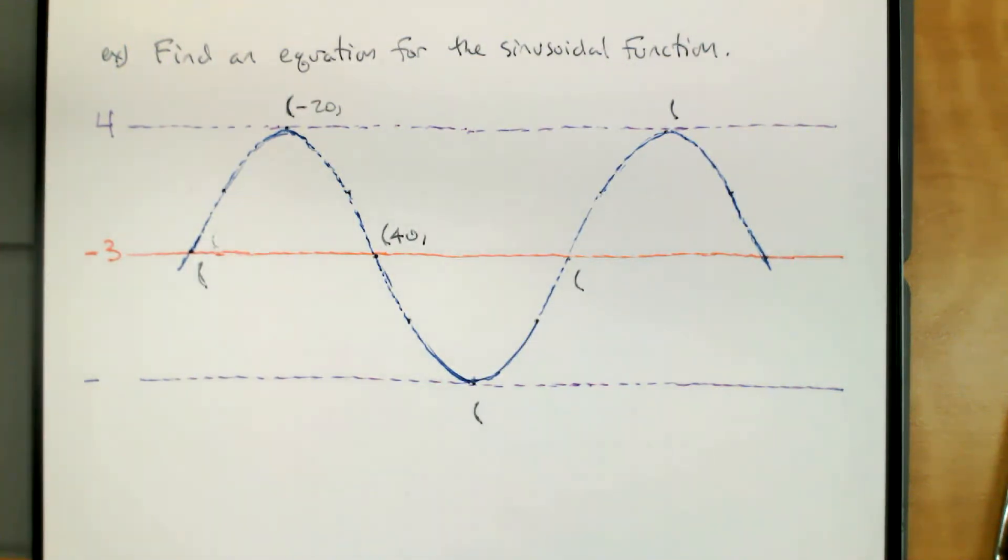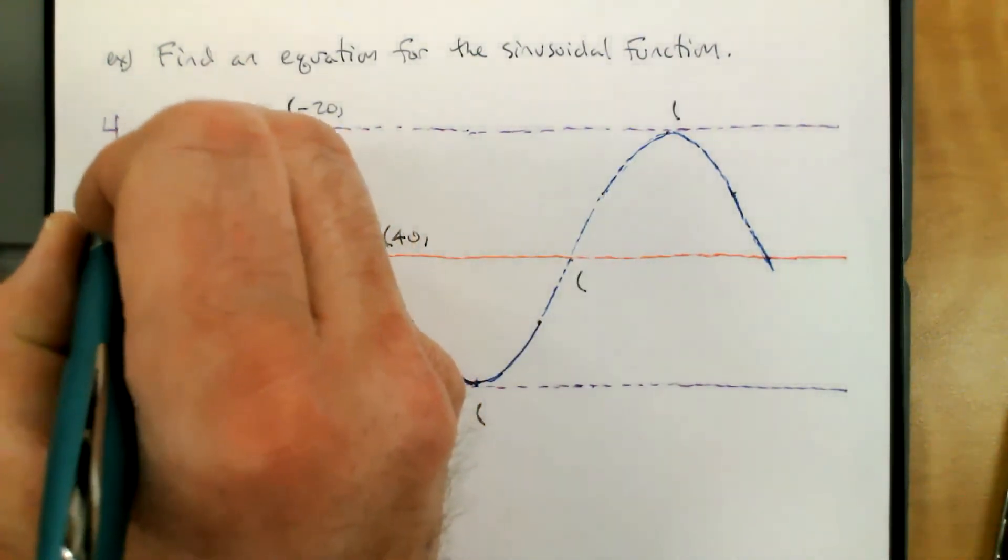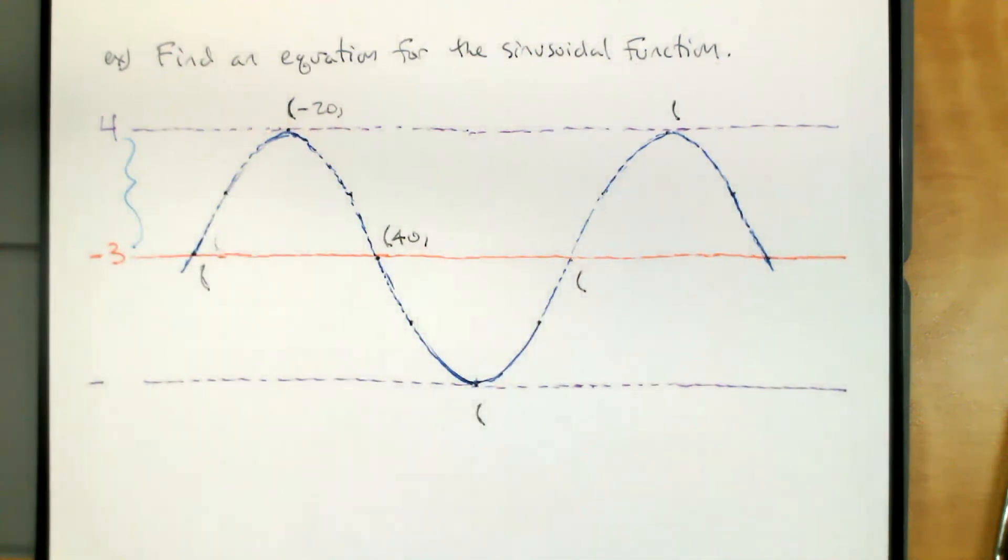So we haven't got all the information, but I did tell you where the middle was, and I did tell you where the top was. So we can use that to figure out the amplitude. If the middle is at negative three and the top is at four, what's the amplitude going to be?